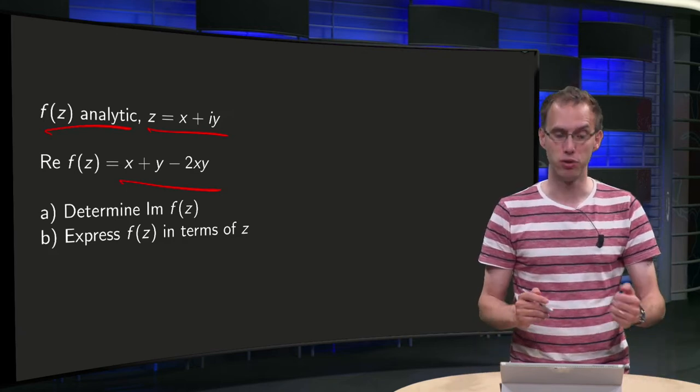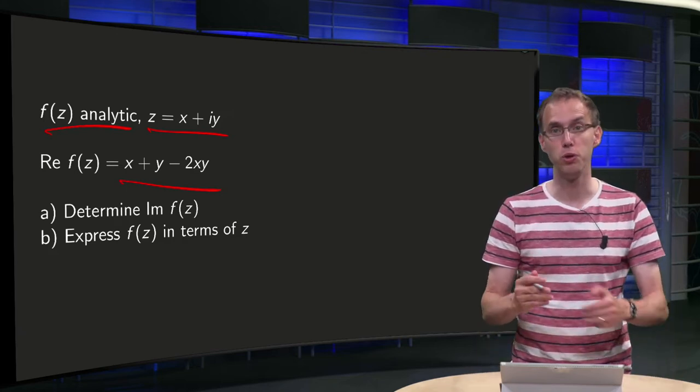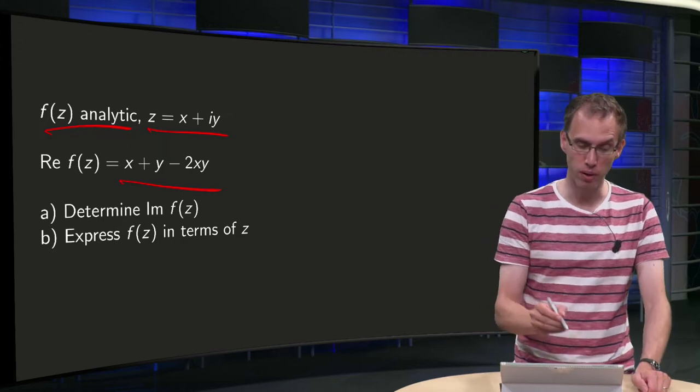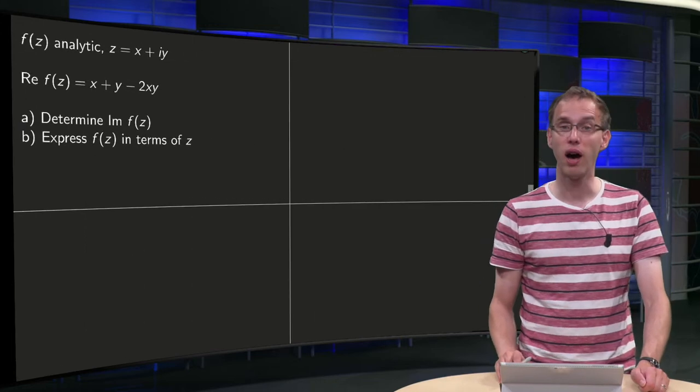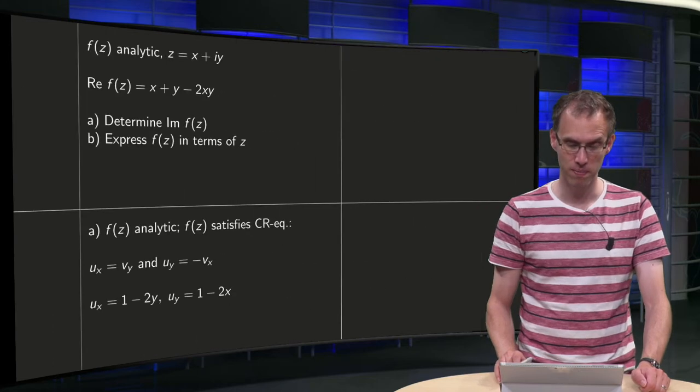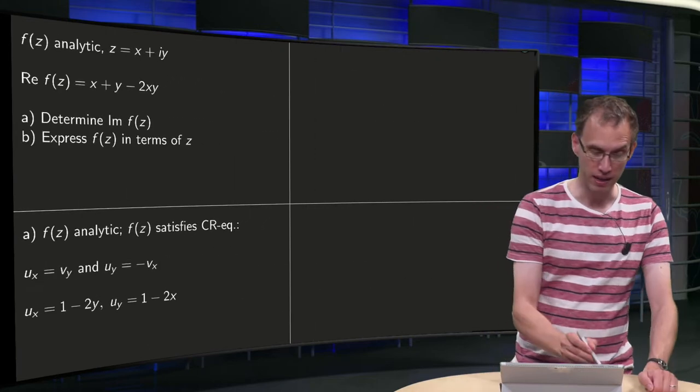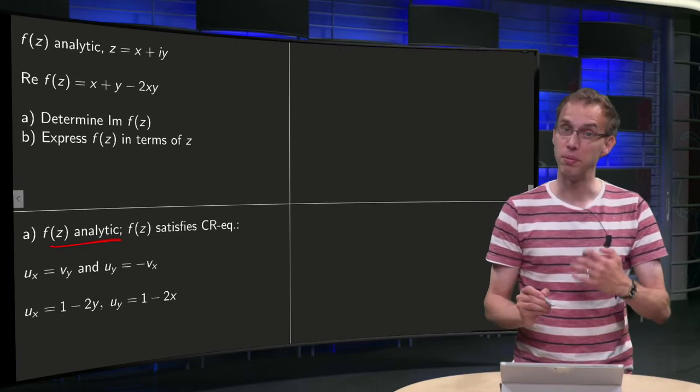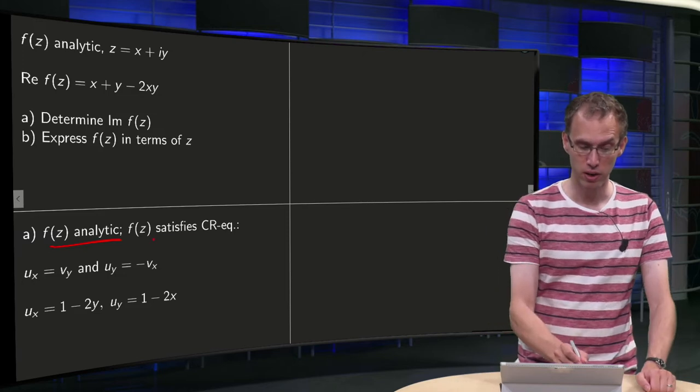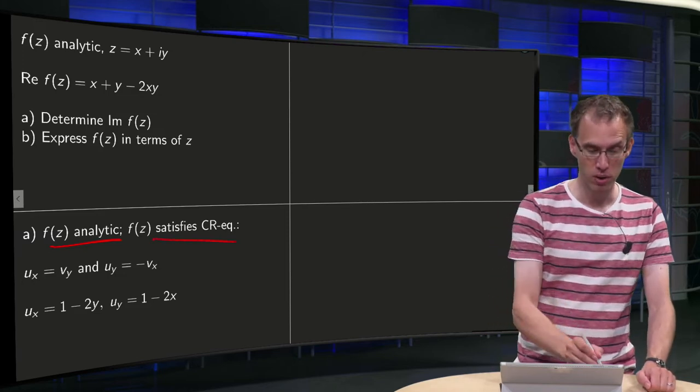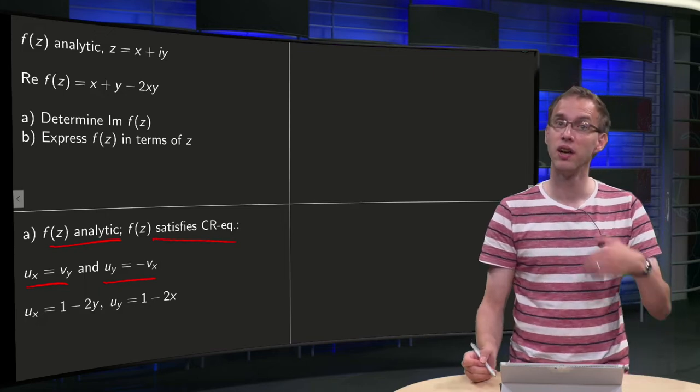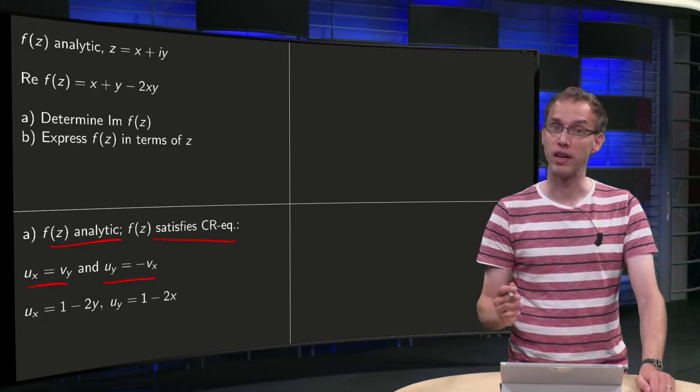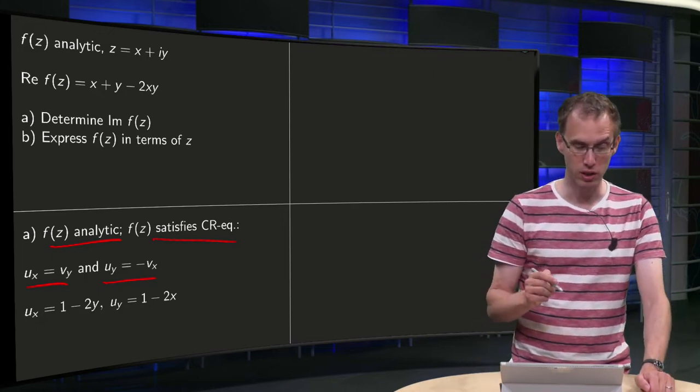So we will set as usual our f(z) = u + iv, so we know our u already: x + y - 2xy. So how are we going to find our v? Well, we have an analytic function and that means that f(z) has to satisfy the Cauchy-Riemann equations. So that means that we know ux = vy and uy = -vx.